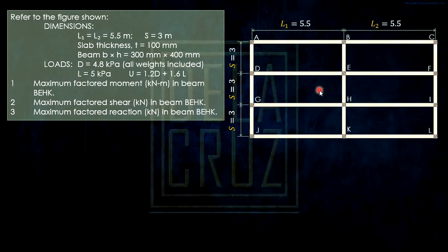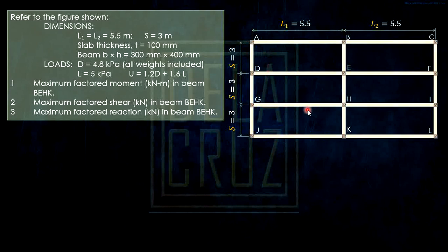We need to distribute the load from the slab to the beam. Take note this slab is supported on all sides — considering slab ABDE, it is supported on both the short span and the long span. So theoretically it is a two-way slab or two-way bending, therefore the loads from the slab are distributed in two-way direction. That is the theoretical analysis here. Unless only one span is loaded, that would be one-way slab behavior.